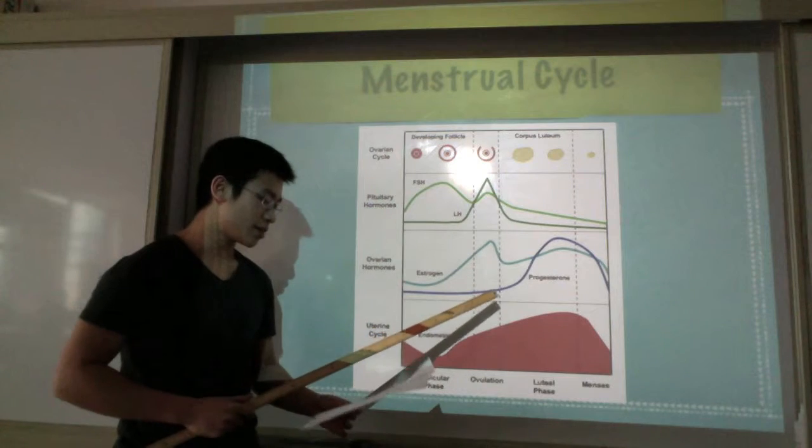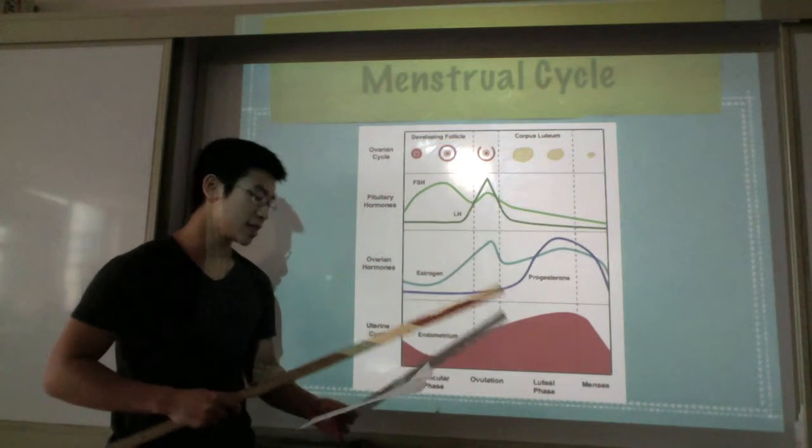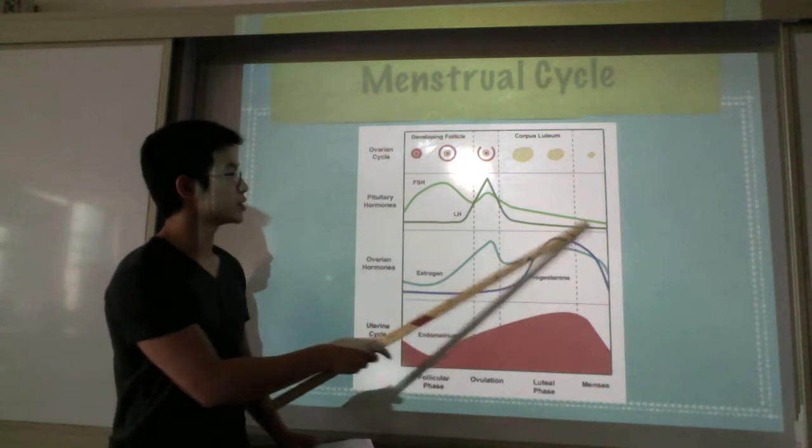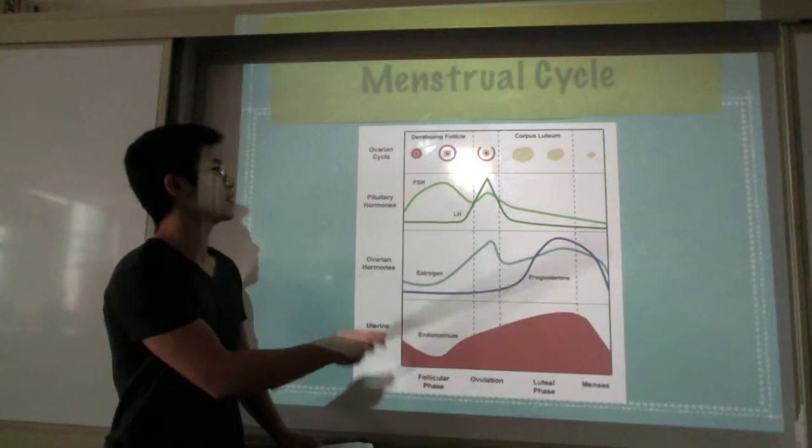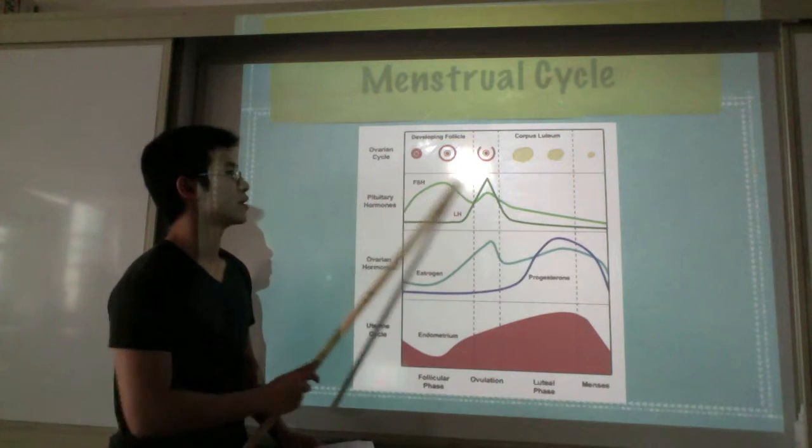And since FSH is no longer inhibited, the FSH can start the ventral cycle again.